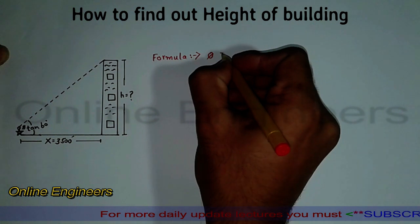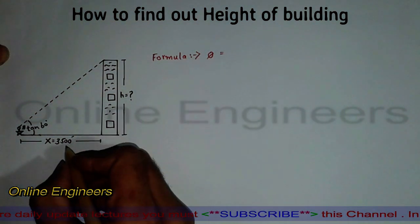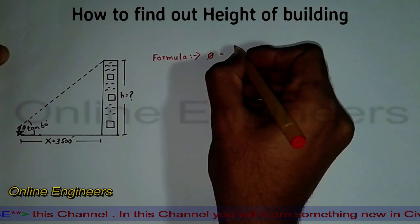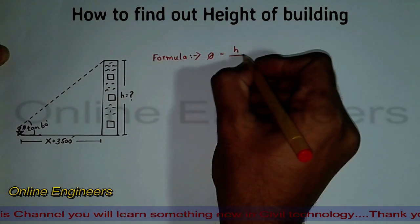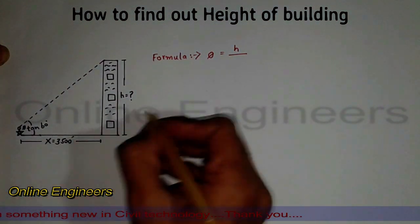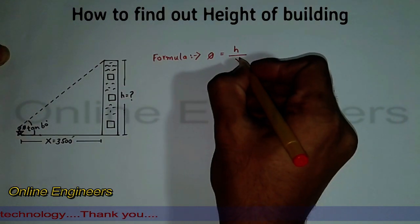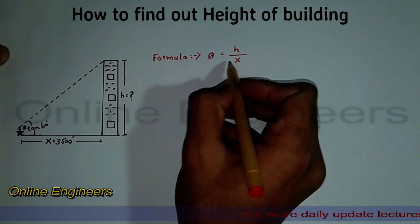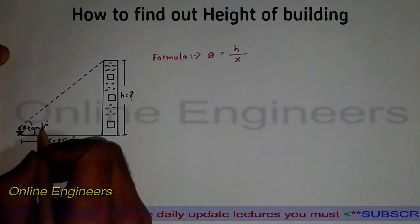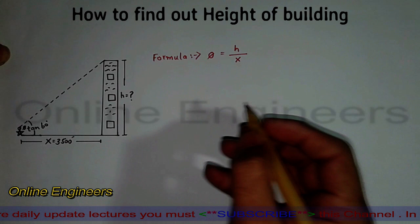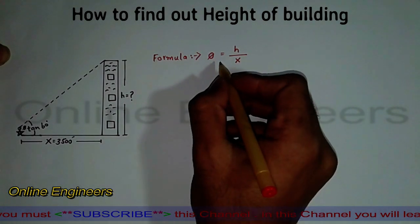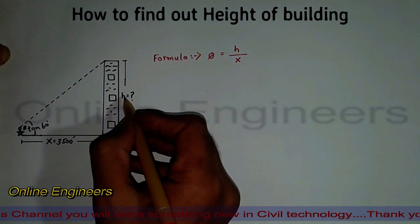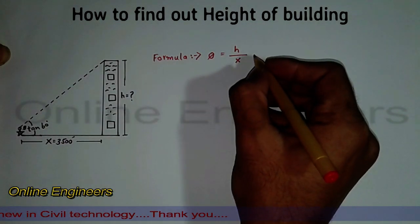tan θ = perpendicular divided by base. We have H as the perpendicular and X as the base. So we have these two values — X and tangent theta (the angle) — and from this formula we will find H, the height of this building.